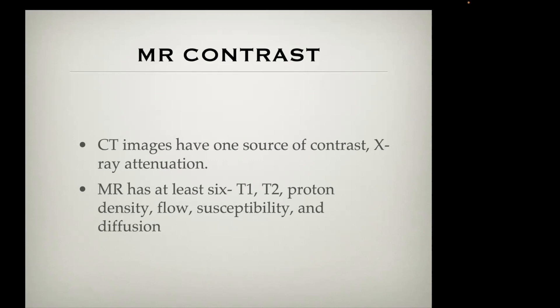Fat has a short T1 relaxation time, while fluid has a long T1 relaxation time. Then there's T2 tissue contrast, proton density — where there's very little water like in the paranasal sinuses we get low signal, while the brain has more water and higher proton density. Then flow, which is where contrast arises when we do MRA, both 2D and 3D time of flight, and susceptibility, which is the property of distortion of the magnetic field used in susceptibility-weighted imaging.